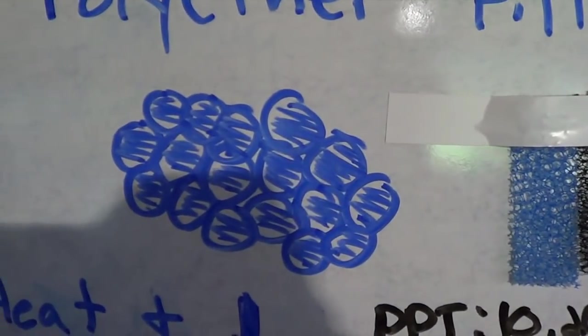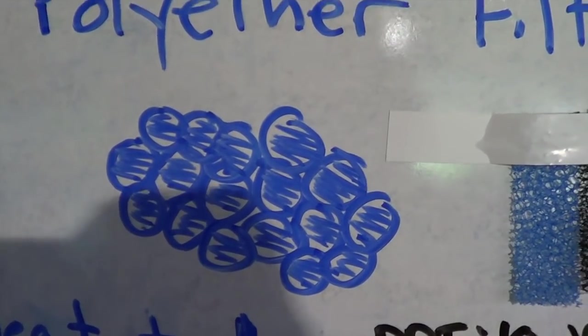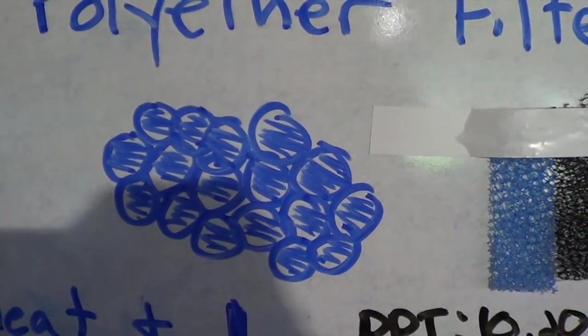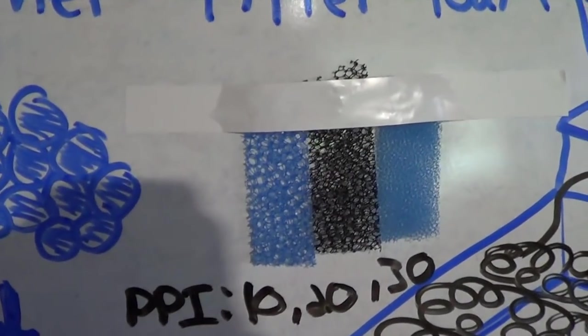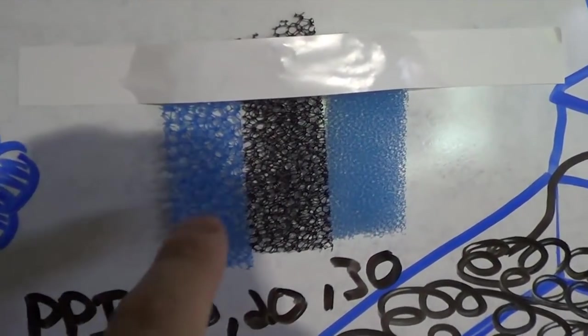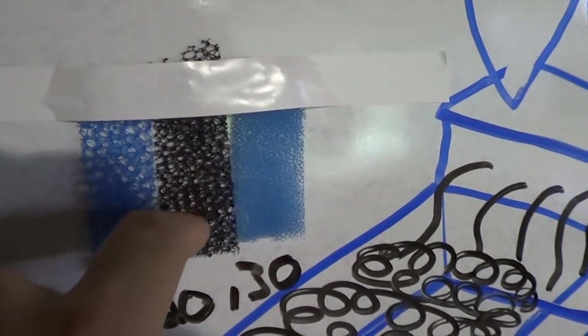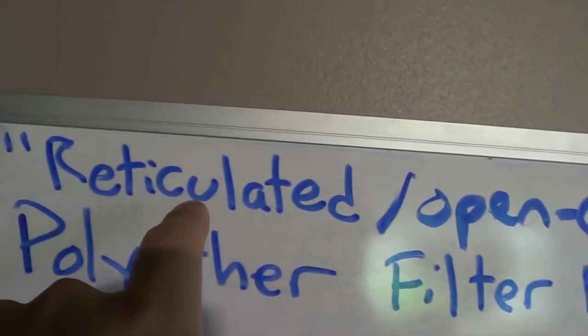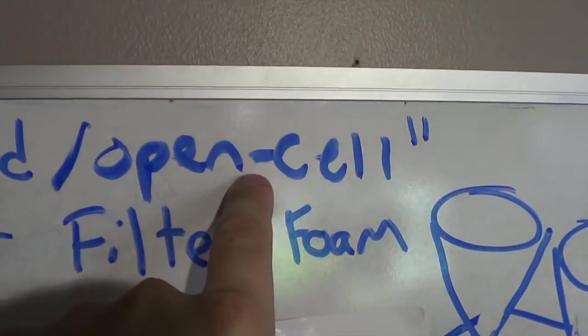Obviously that stuff doesn't work very well for aquariums. It works fine for beds and cushions and mats and chairs and everything else in the textile world. But it doesn't work well in the aquarium world because you need the water to get through. You need as much surface area as possible. That's where the word reticulated comes from, and where the word open cell comes from.